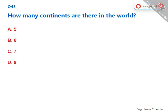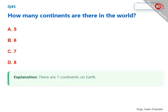How many continents are there in the world? There are seven continents on Earth. The correct answer is C. 7.